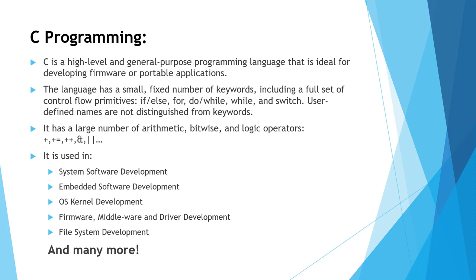For embedded systems, we need to give instructions in the form of programs. One of the programming languages used is C. C is a high-level, general-purpose programming language ideal for developing firmware or portable applications. It has a small fixed number of keywords including control primitives: if-else, for, do-while, while, switch. It has a large number of arithmetic, bitwise, and logical operators. C programming is used in system software, embedded software, operating system kernel, firmware, middleware, and driver developments, and many more.